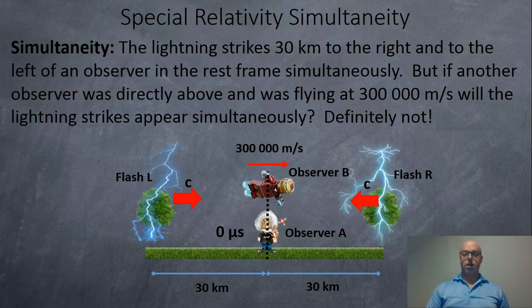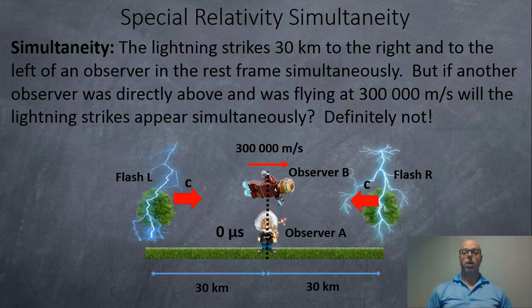So here we got someone flying overhead. At time 0, the observer B is flying directly over top of observer A. They are there in the same place at the same time. But observer B is moving towards flash R and away from flash L. So will it be simultaneous? Close enough maybe, but we'll see.